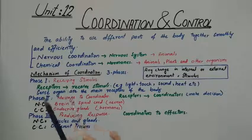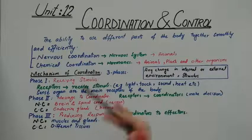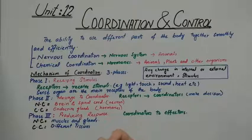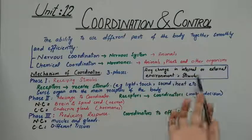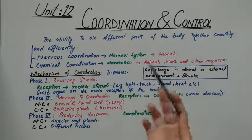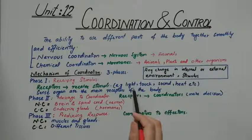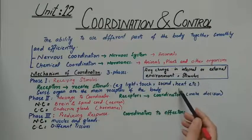Phase 1: When some change occurs in the external or internal environment, specific parts of the body feel that change. That change is the stimulus. Examples of stimuli types include light, touch, sound, heat, and so on — any type of change that the body can detect and respond to.